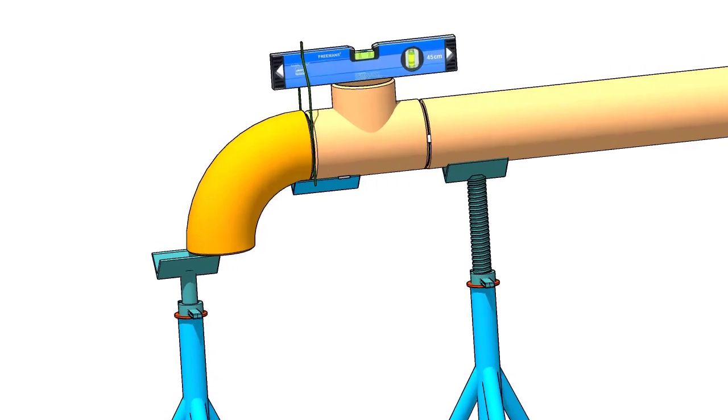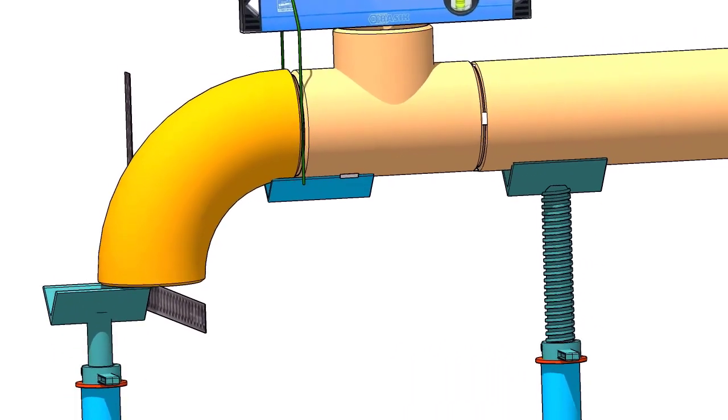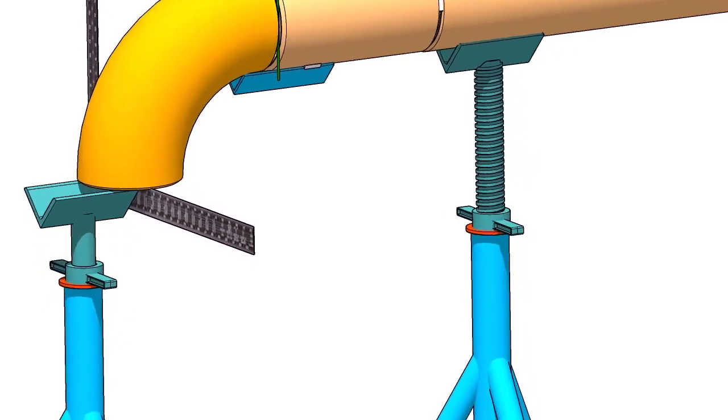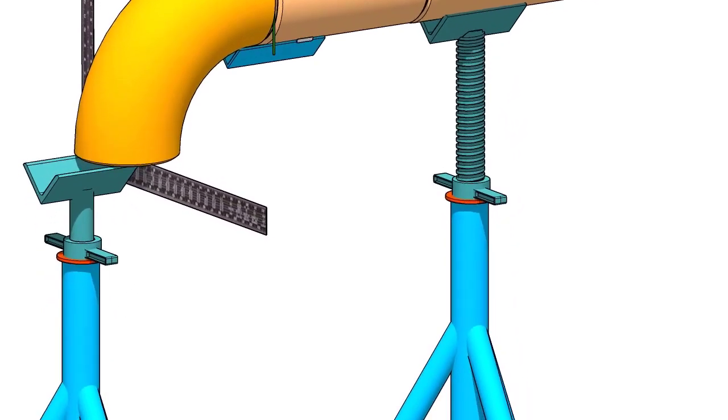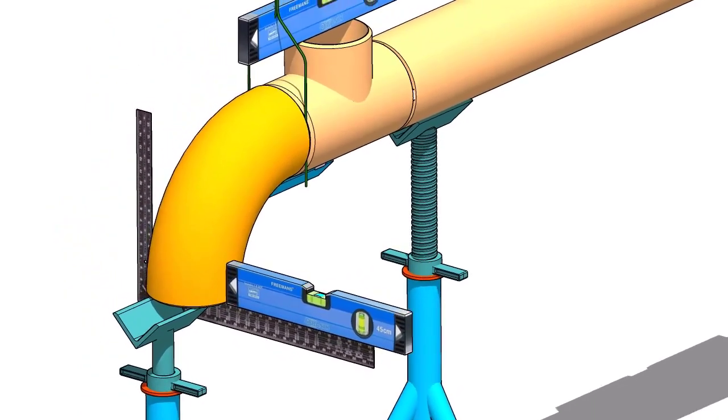Hold a large right angle or a straight edge below the elbow face firmly. Put a level bottle on the right angle as shown. Rotate the elbow to make the face level. Tack weld on both sides of the elbow with the tee.